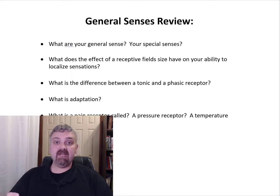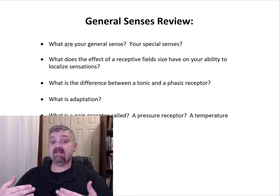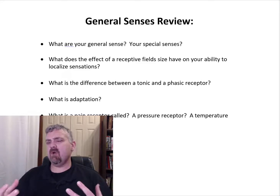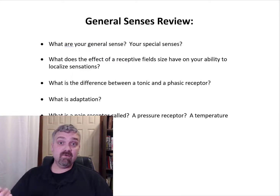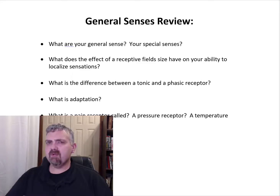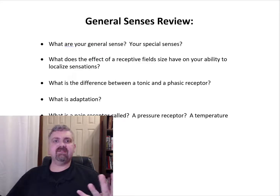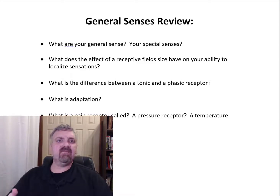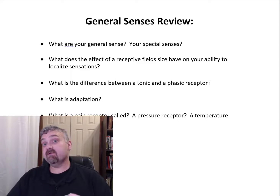Phasic receptors are looking for changes and are usually off. Your thermal receptors — your temperature receptors — would be the best example. You're going to sense a change in temperature; you're not going to constantly know what the temperature is unless it's way too hot or cold and uncomfortable. You go outside and it's five degrees cooler than you'd like — you notice that, but then you get used to it pretty quickly. When you first put your socks on you feel them, but then you stop feeling them — there's no more change. So tonic receptors: always on. Phasic receptors: usually off, they respond to changes in sensation.